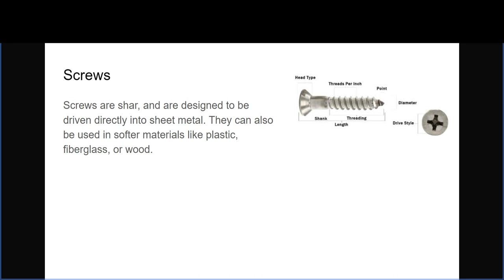If the sheet metal you're using isn't being loaded in shear, then I think you should use rivets instead — things like pop rivets that are pretty simple to install. You don't have to go through the hassle of trying to thread sheet metal, and if the sheet metal is less than about an inch in thickness you run the risk of tearing at the drilled hole location if you try to secure it that way. A rivet is a pretty simple way to keep something together in that scenario.